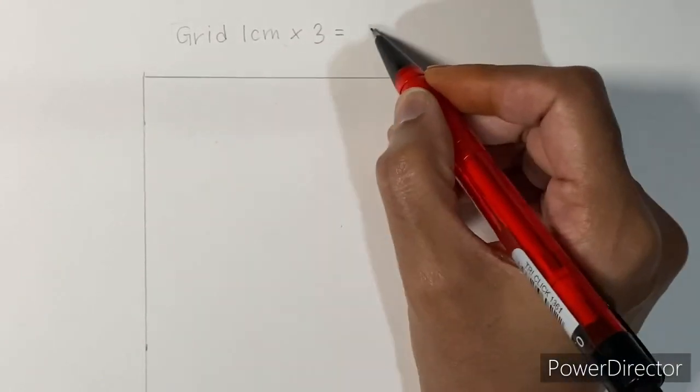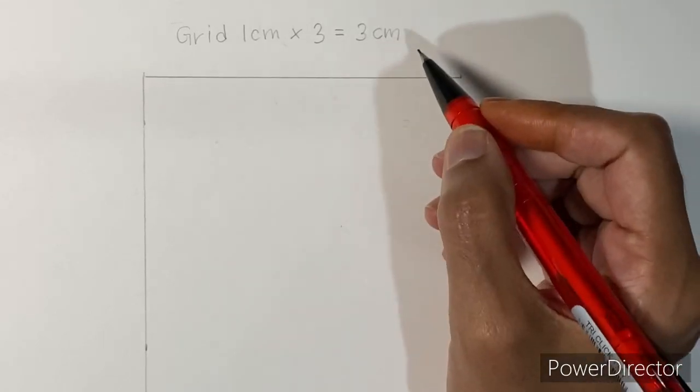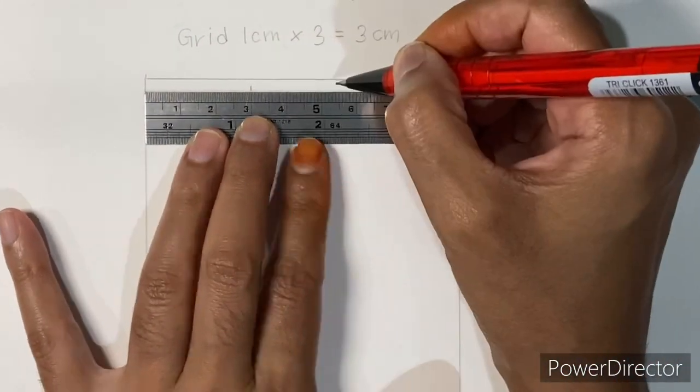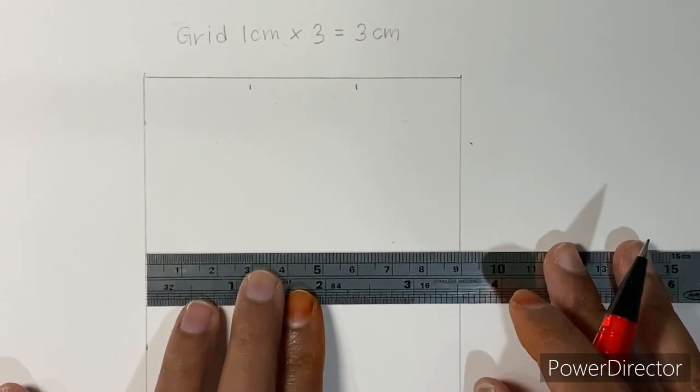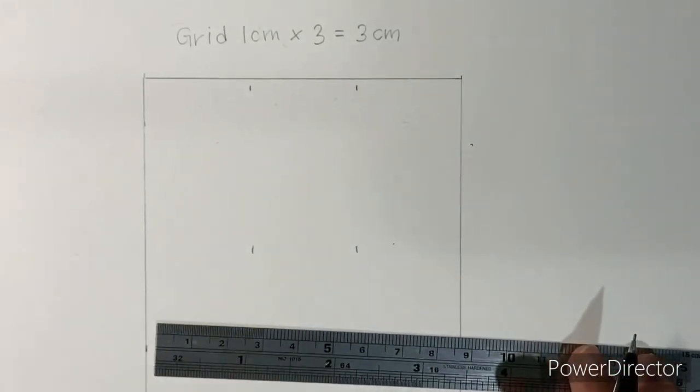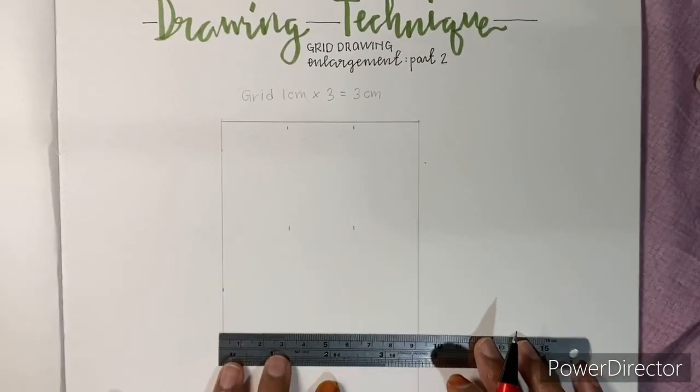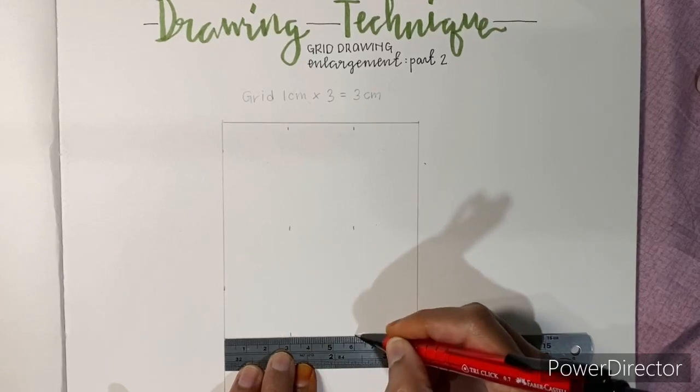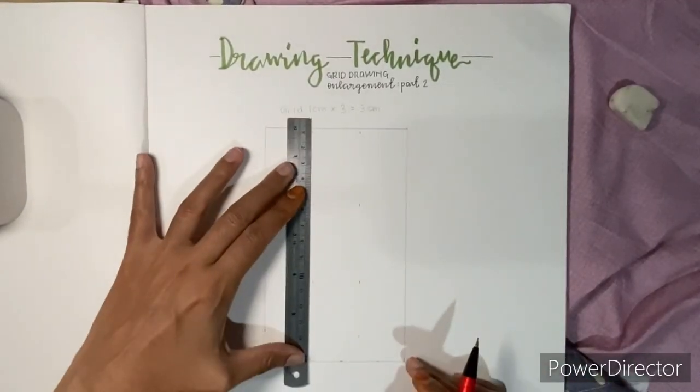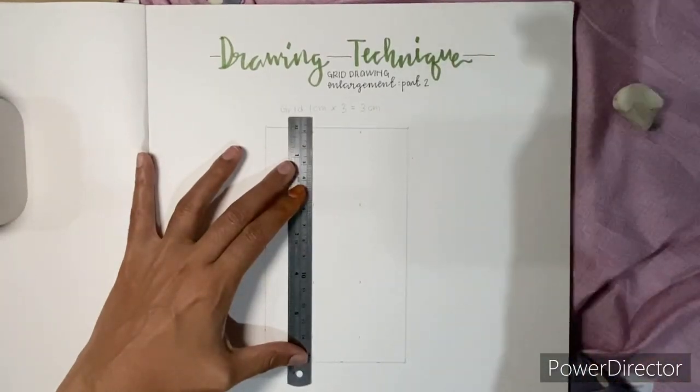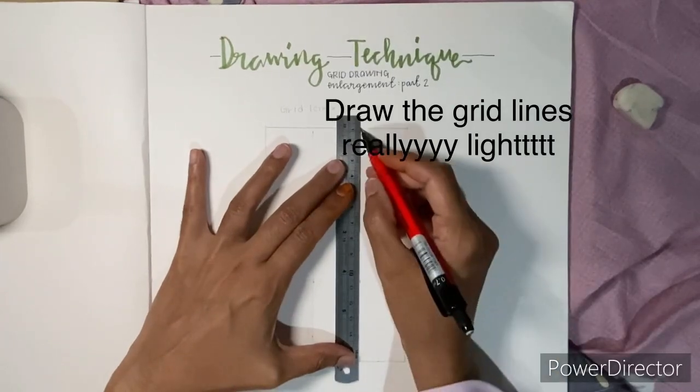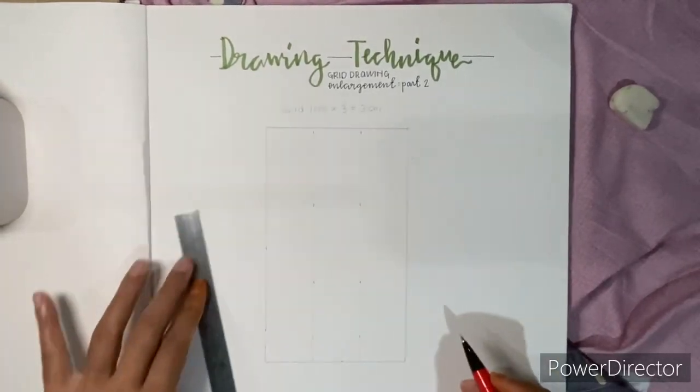Since you're enlarging the drawing three times, the grid also must be enlarged three times. So you times it by three and make the measurement horizontally. Make sure you make a few marks in order to get a straight line. Connect the marks. Draw a very light line because you are going to erase the lines later.